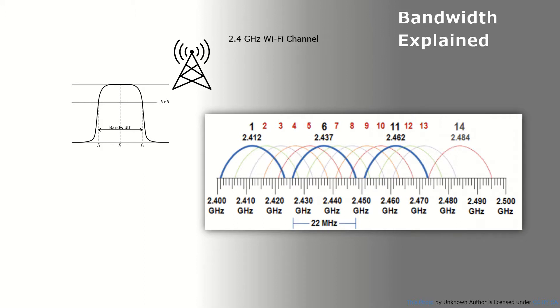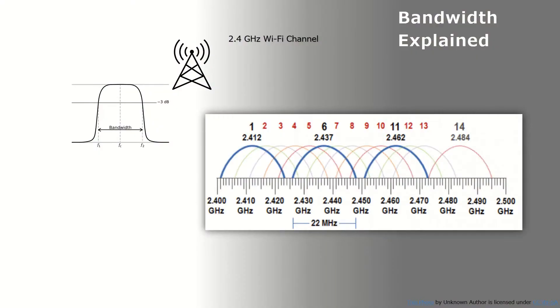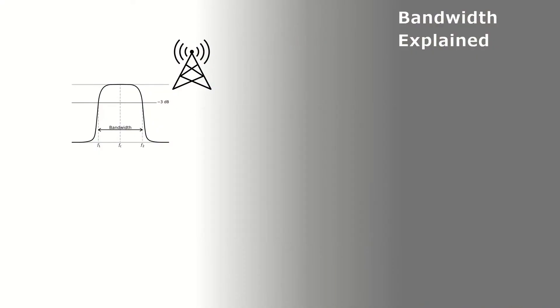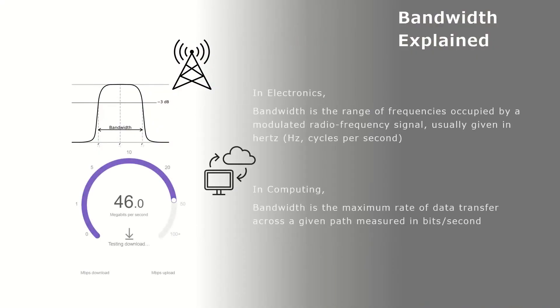Let's look at another example of bandwidth in an electronic system — the Wi-Fi system. Here you can see that the bandwidth of one Wi-Fi channel is 22 megahertz. Now let's go back to computing, which is our main concern. In computing, as we said, bandwidth is the maximum rate of data transfer across a given path.